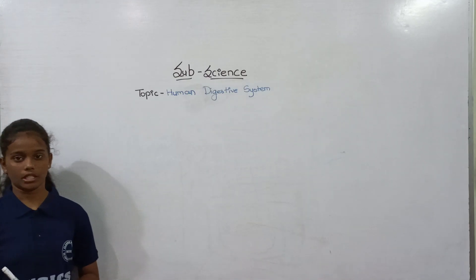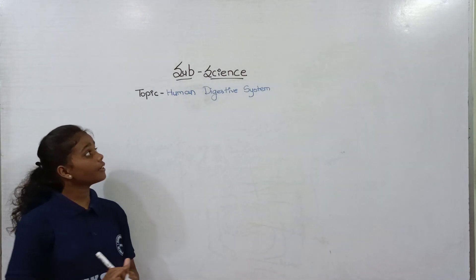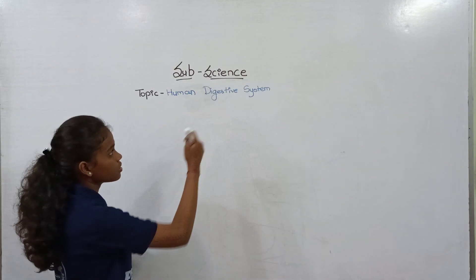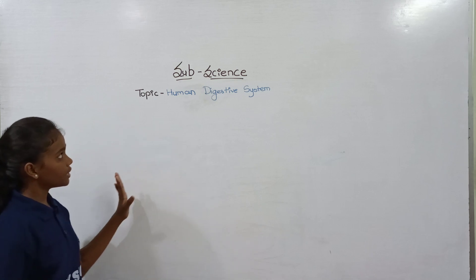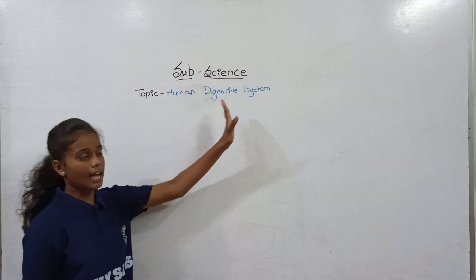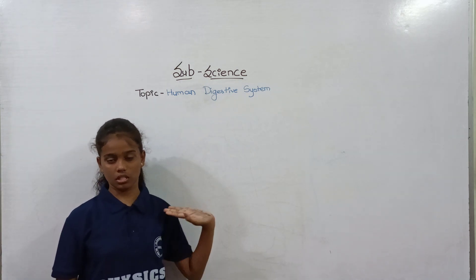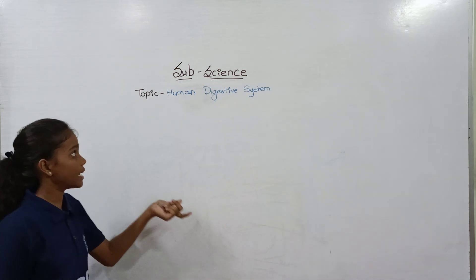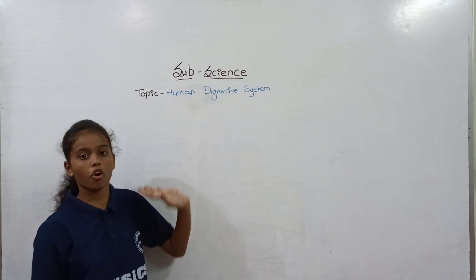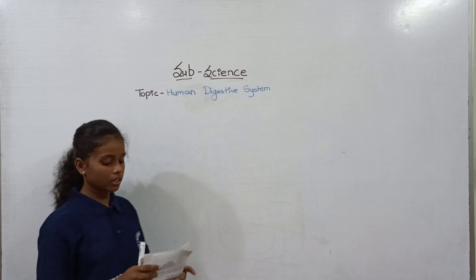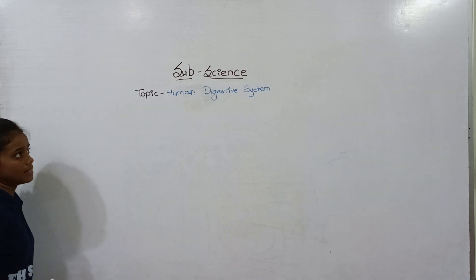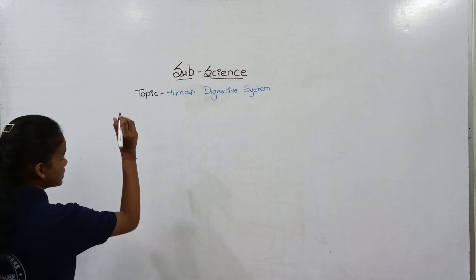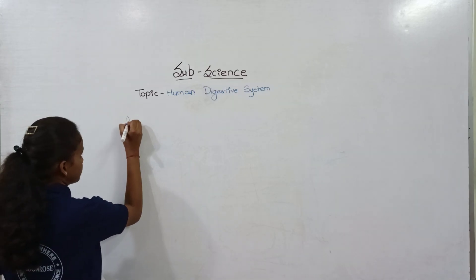We are humans and we have a digestive system. So we will discuss the digestive system. What is the digestive system of humans? There are 5 steps in the digestive system.